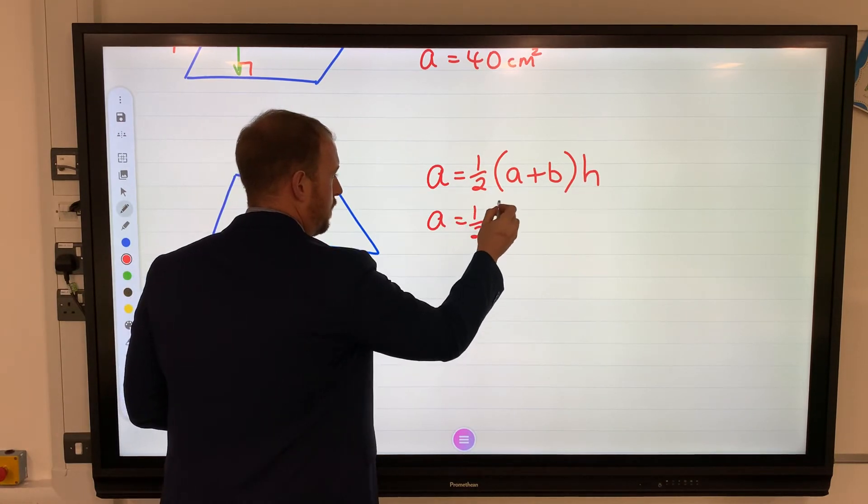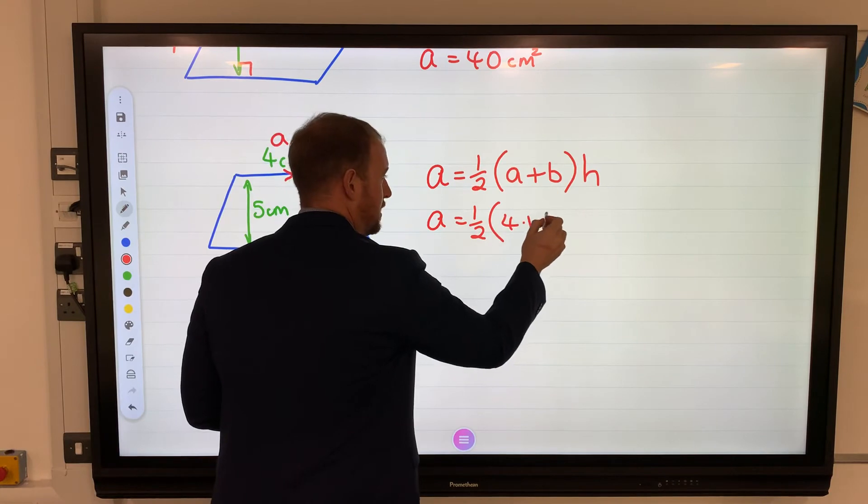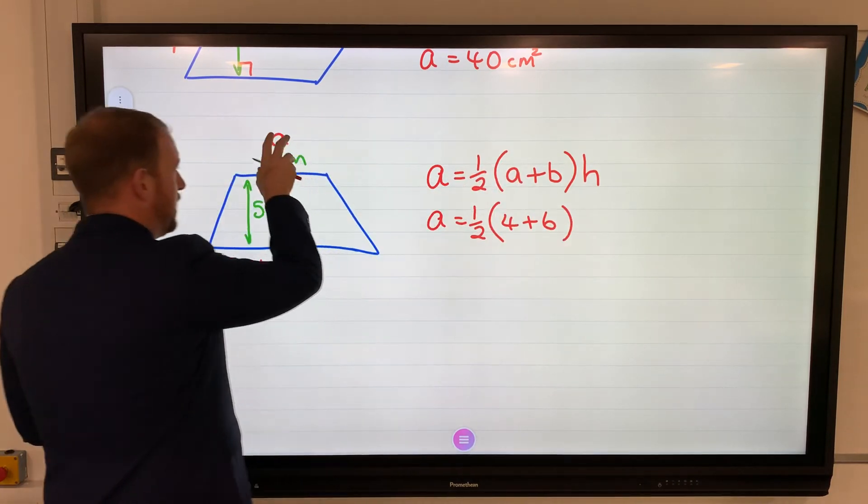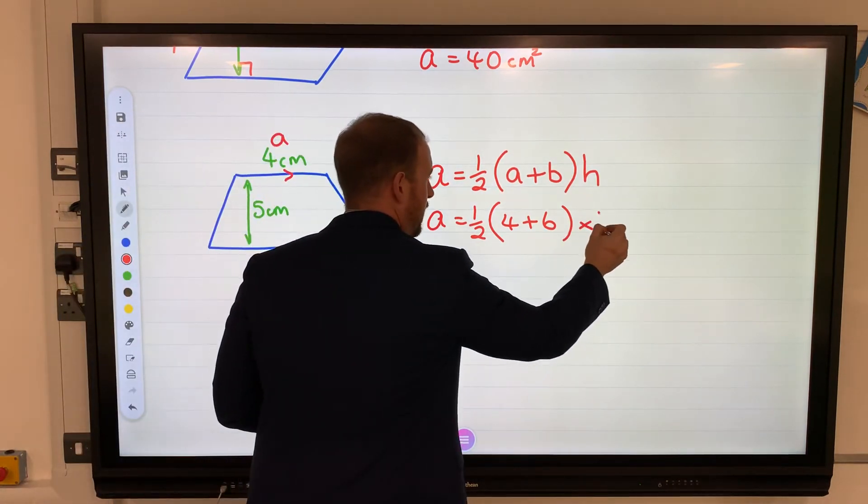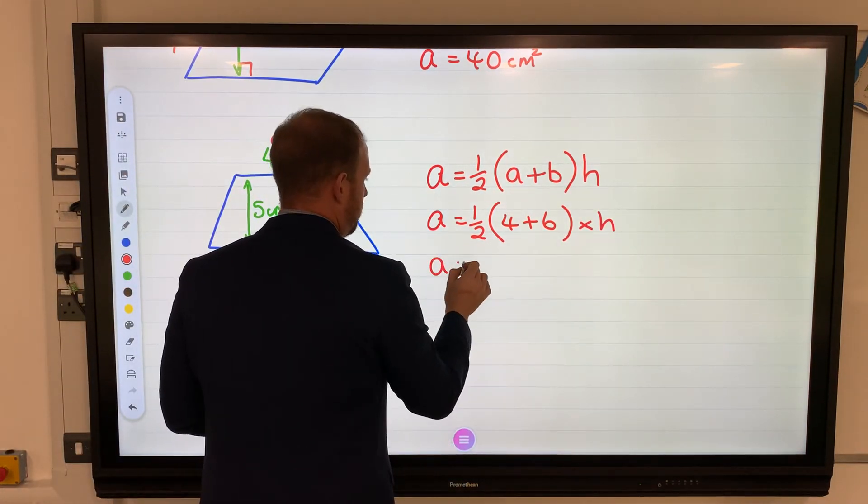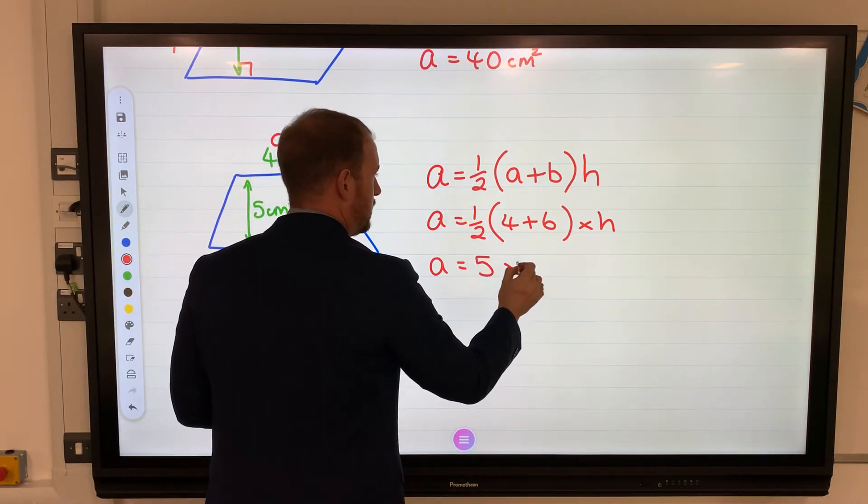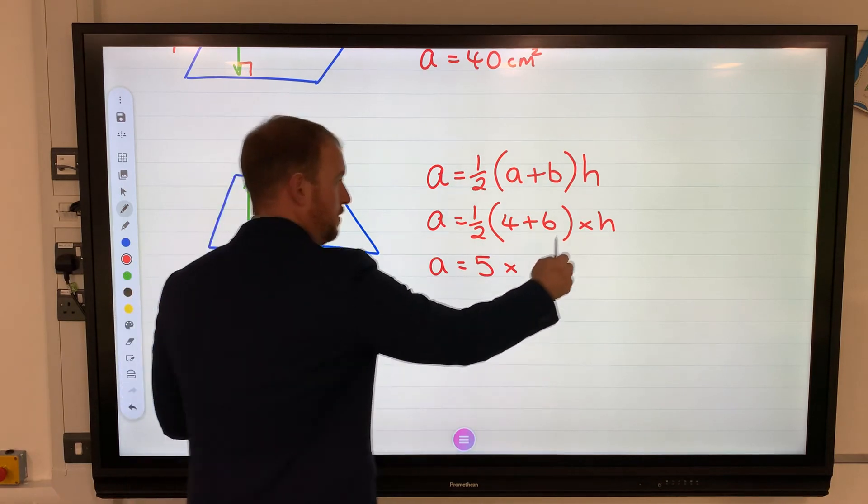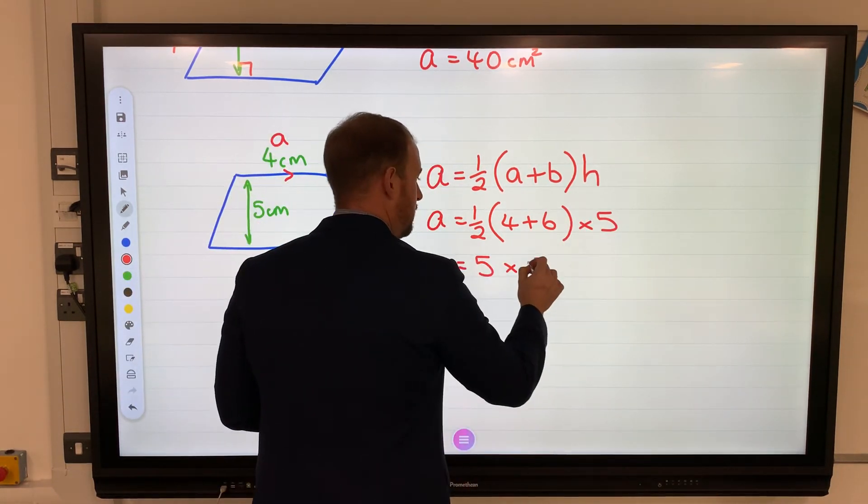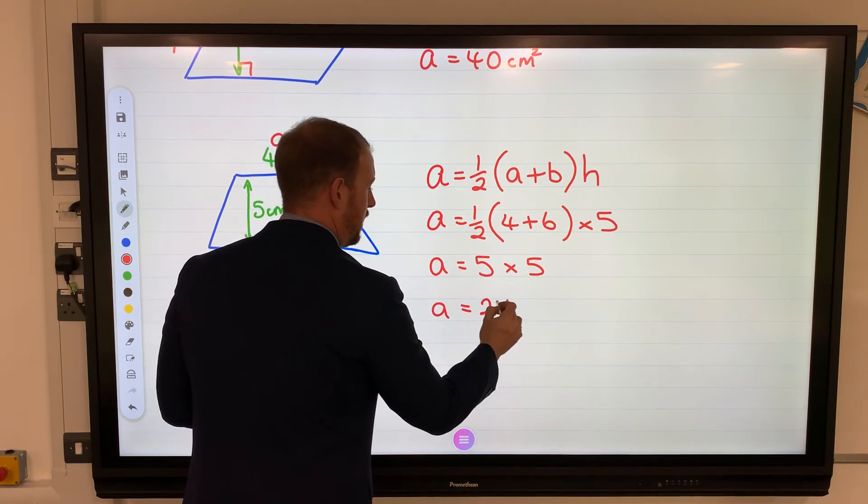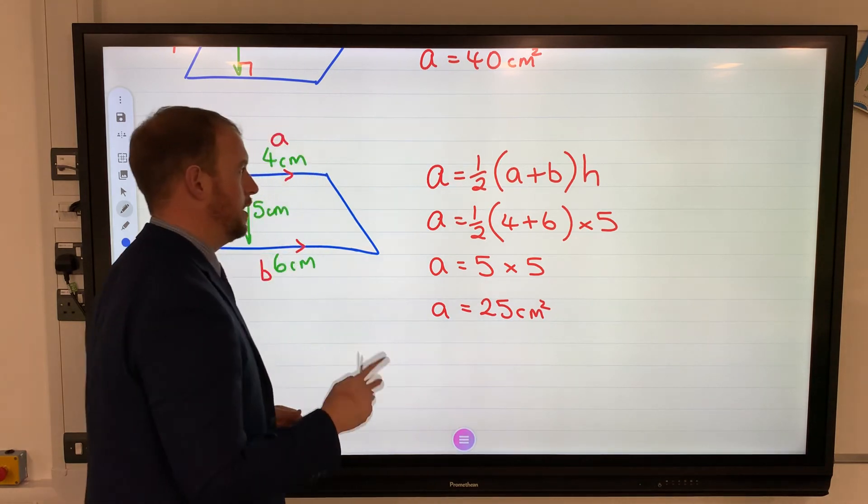Substitution: half of the total of a and b, which is four and six. Hopefully you can see now I've taken the letter out and I've put the number in, times by the height which is five. Well, four and six is ten, half of ten is five, times by the height. The height was five, times by five to make 25 centimeters squared. So we've got a couple of tough formulas there - that's your trapezium.